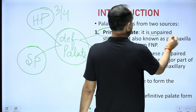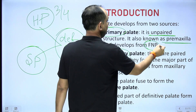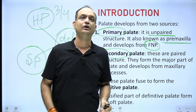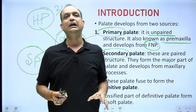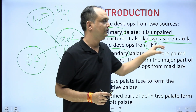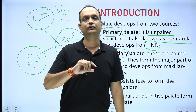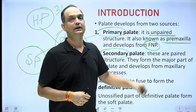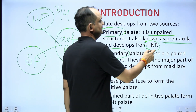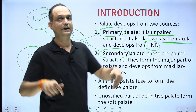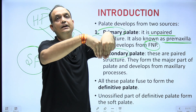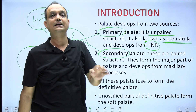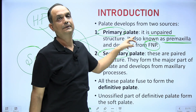The primary palate is an unpaired structure. It develops from the premaxilla and is a part of the frontonasal process. Initially, five swellings form around the stomodium; the frontonasal process is the swelling from above. When nasal placards appear on this process, two swellings form — the medial nasal and lateral nasal prominences. Both medial nasal prominences join together to form the intermaxillary segment, which forms the premaxilla. This gives a shelf-like projection from its deeper part — a palatal projection not visible from outside — known as the primary palate.